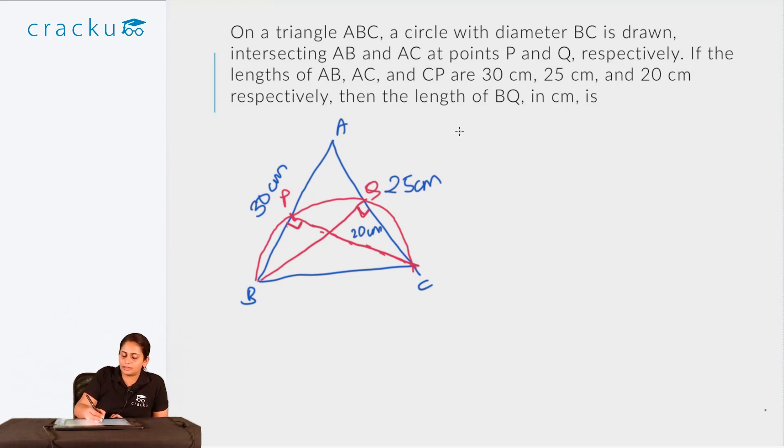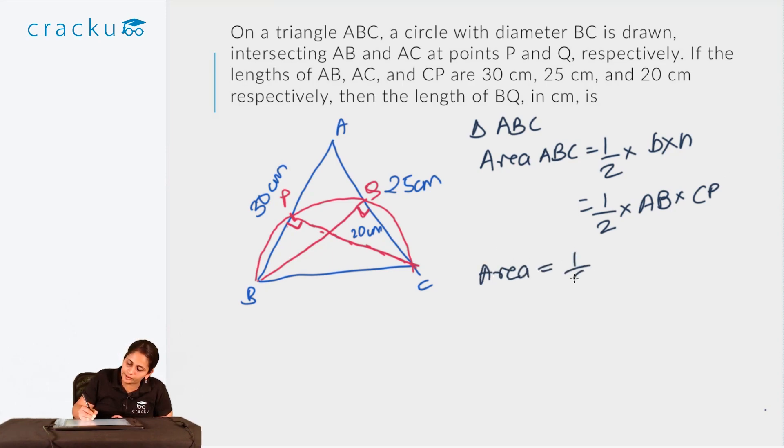Now consider triangle ABC. In triangle ABC, what is the area of ABC? Area of ABC is half times base times height. Now consider the base to be AB. So this would be half times AB, and the height would be the perpendicular dropped from C, so that is CP. Similarly, the area of ABC is also equal to half times base times height where base is AC. So this is half times AC, and the other perpendicular is this, so that is BQ. So if I equate both these sides, I get half times AB times CP equals half times AC times BQ.